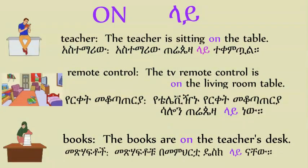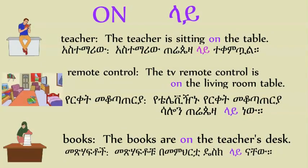In the second picture, we are focusing on the remote control. Where is the remote control? The TV remote control is on the living room table. The books are on the teacher's desk. On is one of the prepositions.